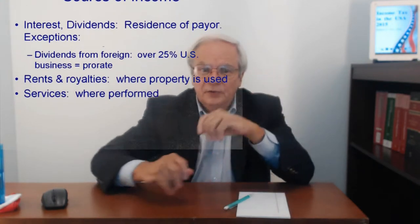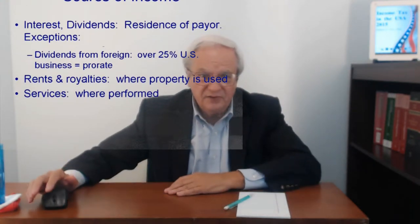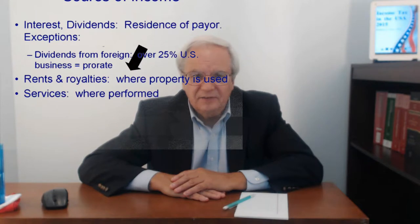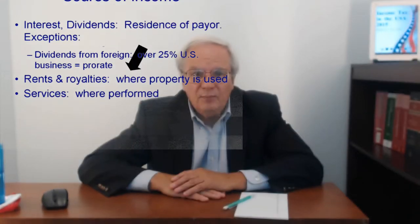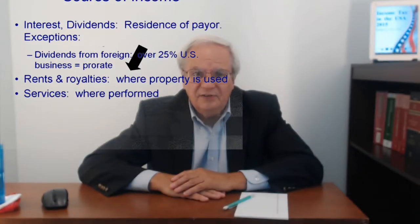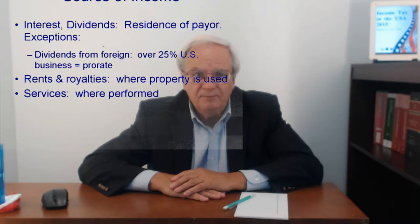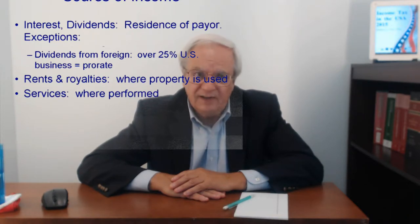There are two technical exceptions to this. Rents and royalties are really easy too. The income is sourced to where the property is used at the time the rent or royalty arises. Intangible property is considered used where the rights have relevance.